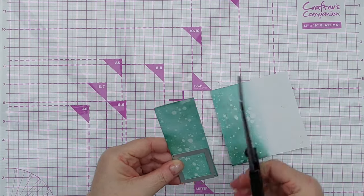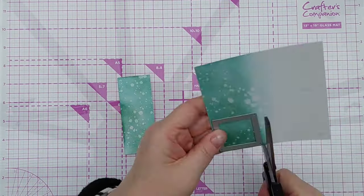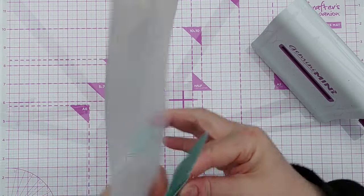Once it was dry I used a small square frame die to cut out four squares and their surrounding frames.